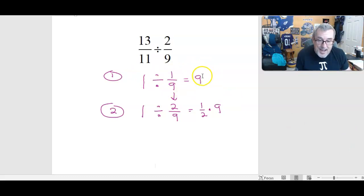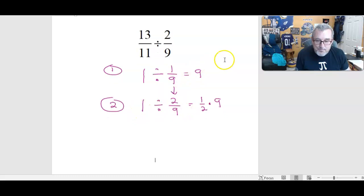If it took 9 1/9ths to make 1, it's going to take half as many 2/9ths to make 1.